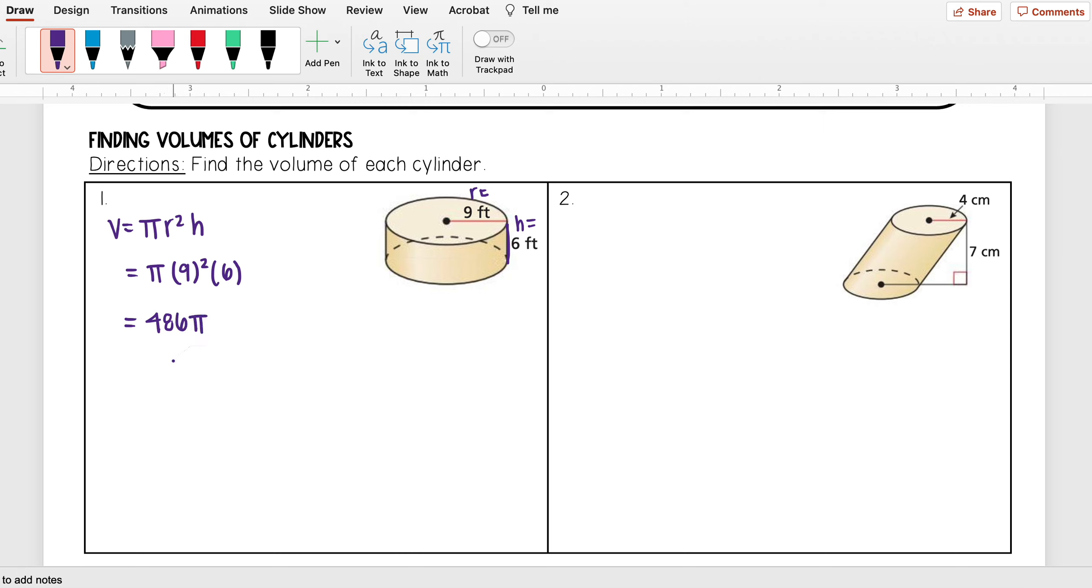And so that's one answer that you could give. Sometimes I will ask you to give me an exact answer, so that means leaving pi in your answer. But other times I'll ask you to go ahead and multiply pi and just round to the nearest tenth. And so if I do that, I get that this is approximately 1526.8 feet cubed.